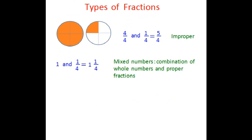Let's look at some more examples. If I have a banana and eat half of it, I would write it as 1 over 2 — a proper fraction. But if I'm more hungry and eat one and a half bananas, I can represent it as the mixed number one and a half. I can also represent the same thing as an improper fraction: I write 1 as 2 over 2, and half as 1 over 2, and adding those gives 3 over 2 — an improper fraction.